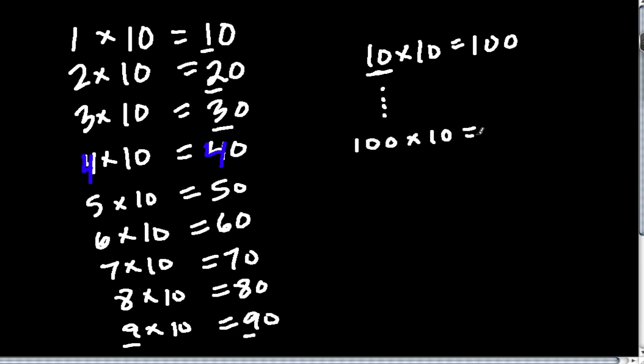Well, 100 times 10 is just, we have one more 0. So 100 times 10 is 100, and then 0. So the number 100 is still in there. There's the 100. Only we're adding one more 0.